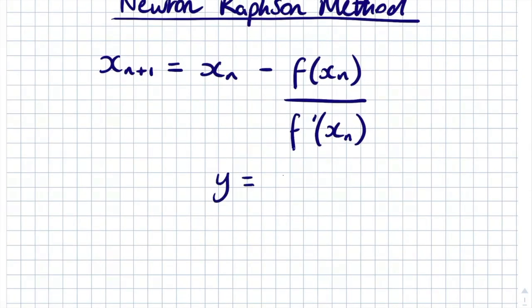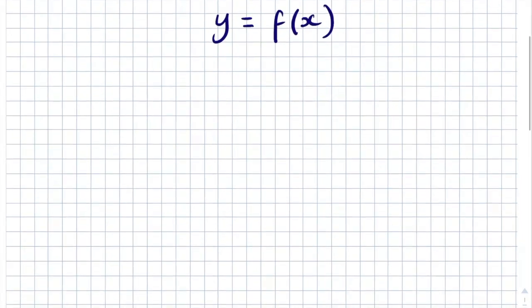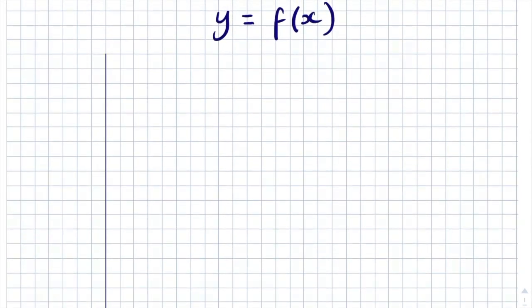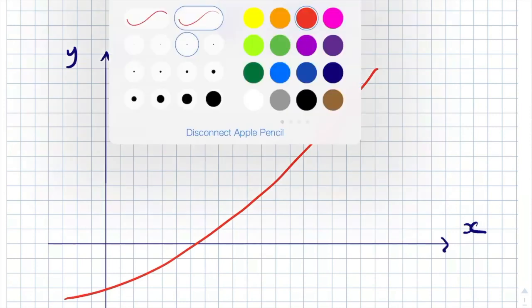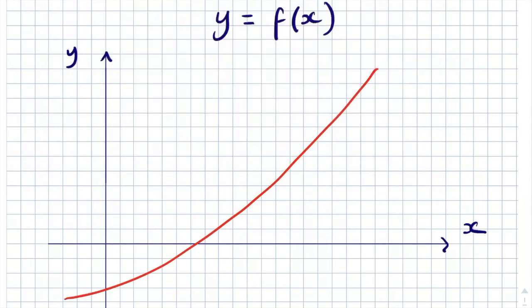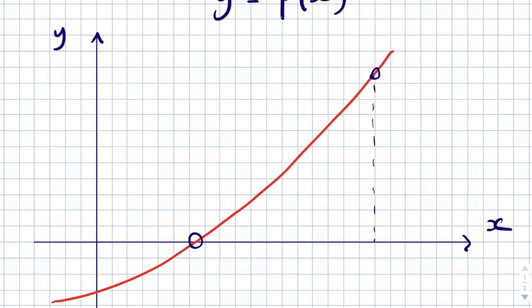So we've got a curve y equals f of x. I'm going to draw this curve with a y-axis and an x-axis. What Newton did is he said he would get a solution for x when the curve crosses the x-axis, when f(x) is equal to 0. He took any starting value along the x-axis — let's say this point here — which has the x-value x_n and the coordinate (x_n, f(x_n)).